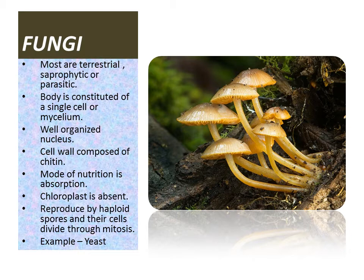The body is constituted of a single cell or mycelium. Mycelium is a narrow tape-like part and they have a well-organized nucleus. Cell wall is composed of chitin. Mode of nutrition is absorption. Chloroplast is absent, meaning they cannot produce food through photosynthesis. They are reproduced by haploid spores and their cells divide through mitosis. An example is yeast.